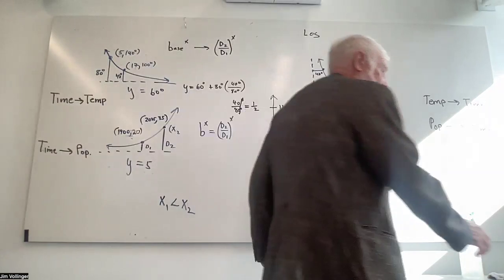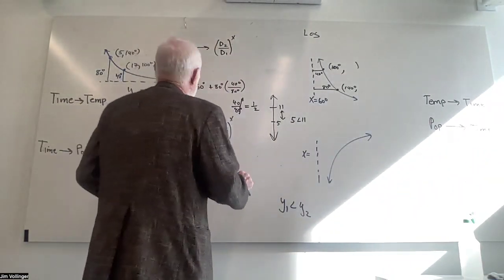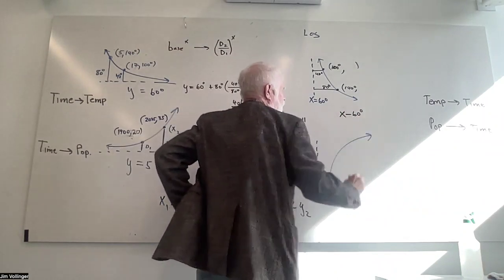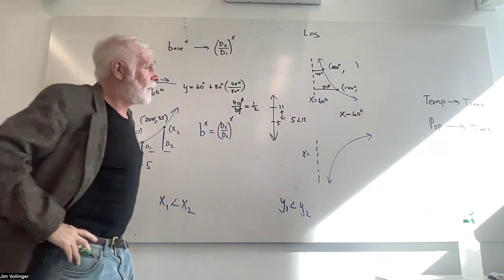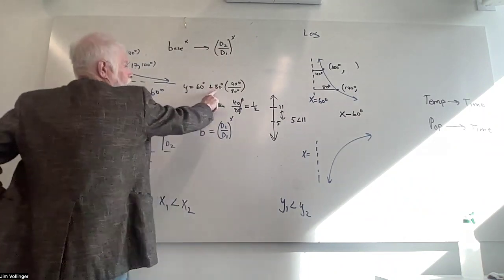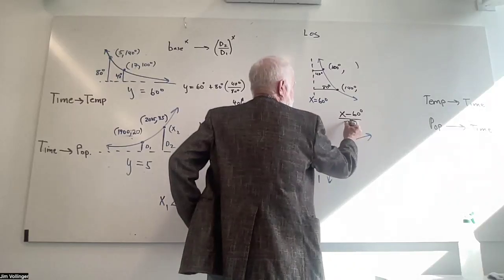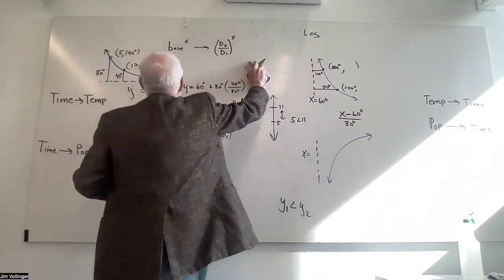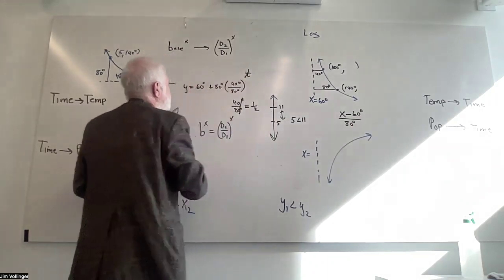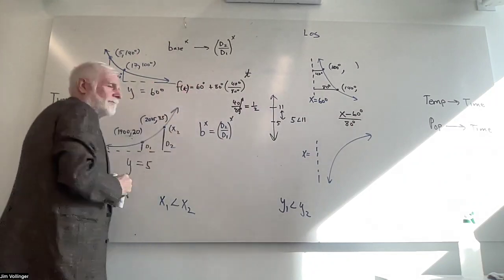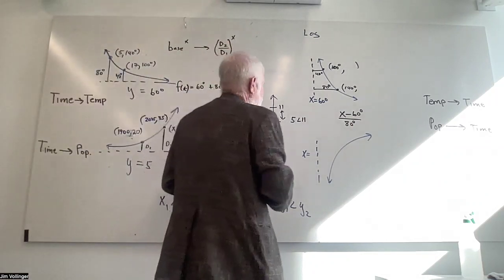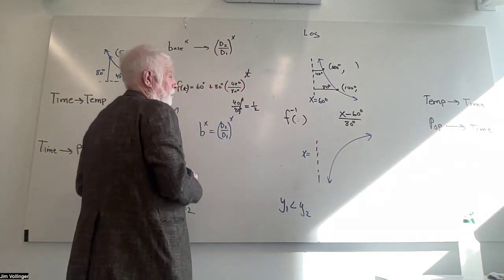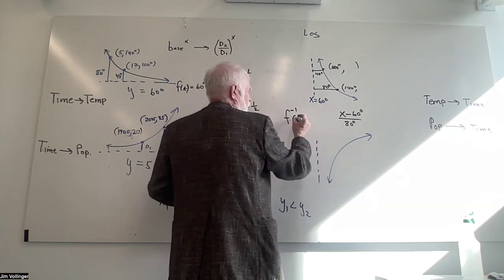How do I build this exponential model? I write y equals 60 degrees. I'm adding 80 degrees, and then my second differential is not 80 degrees worth of change, it's 40 degrees. Now, what is the ratio of 40 degrees to 80 degrees? It's a generic one half. The degrees cancel.